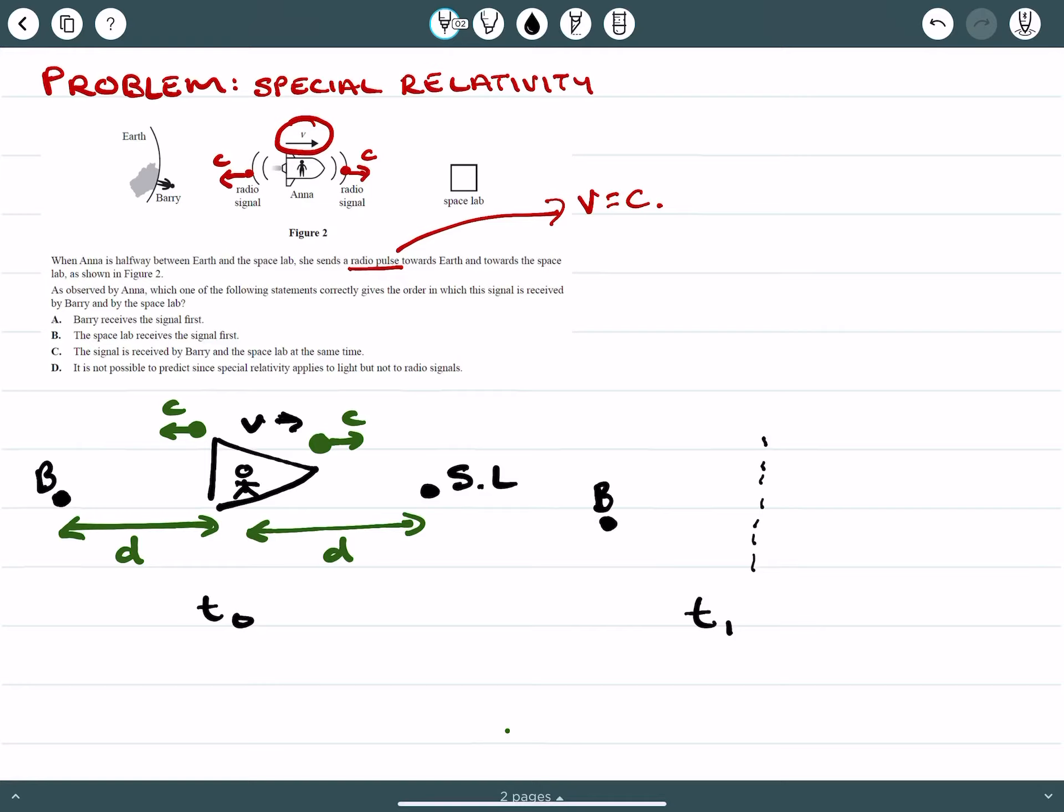And this is our halfway mark. This is Barry. This is our space lab. We can draw Anna. Because she's moving with a velocity, she's moved part of the way. We can have a look at these photons. They're getting closer to their respective points.